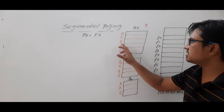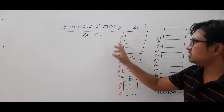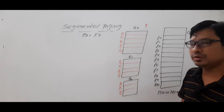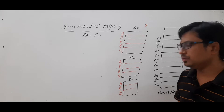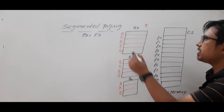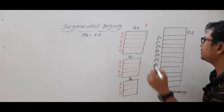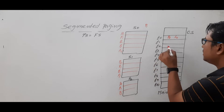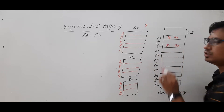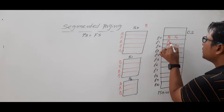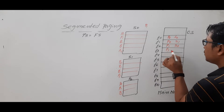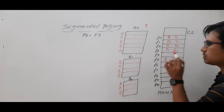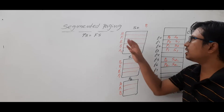Consider a process P1 which consists of three segments: S0, S1, and S2. Segment S0 is divided into five pages (page 0 through page 4), segment S1 is divided into four pages, and segment S2 is divided into three pages. Page 0 of S0 is stored in frame 0, page 1 of S0 is in frame 2, page 0 of S1 is in frame 1, page 1 of S1 is in frame 3, page 0 of S2 is in frame 5, and page 2 of S2 is in frame 6.